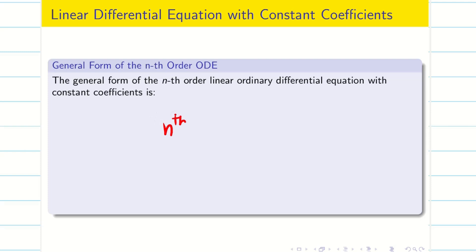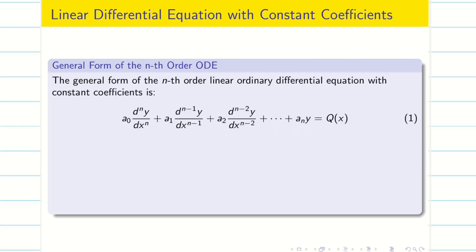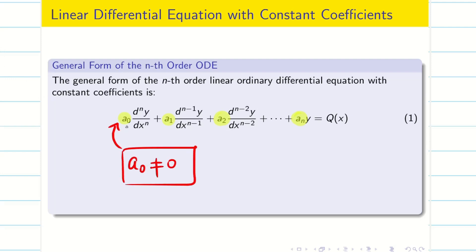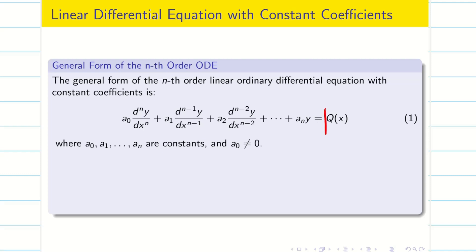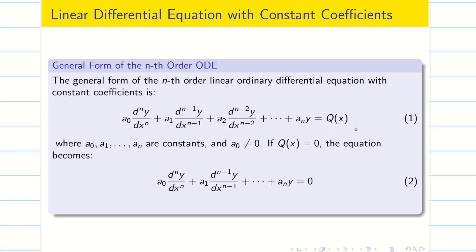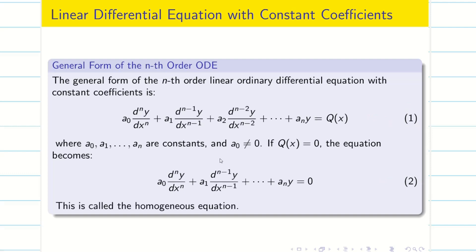Now we are going to write the general form of the nth order ODE, meaning I am differentiating y n times. We have coefficients a₀, a₁, a₂, ..., aₙ which are constants, provided a₀ is not equal to 0 — because if a₀ is 0, the highest power becomes n−1, making it an (n−1)th order linear ODE. The right-hand side is Q(x). If Q(x) = 0, we get equation 2; if Q(x) is non-zero, we have equation 1. Equation 2 is known as the homogeneous equation corresponding to equation 1.